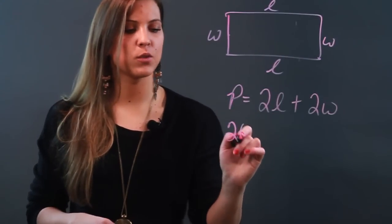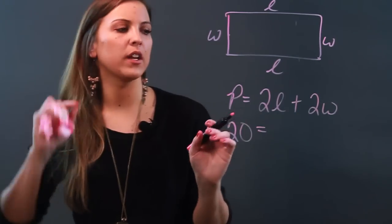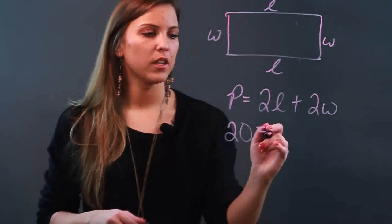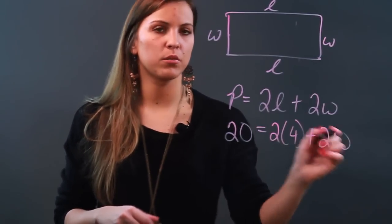So if I know that my perimeter is 20, I do need to know one of these other values in order to figure this out. Let's say you're given your length. Let's say you're given that your length is equal to 4. Then I'm going to do 2 times 4 plus 2W because I don't know W yet.